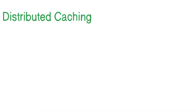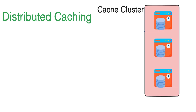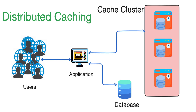So what is the solution? The solution is distributed caching. Instead of relying on a single cache instance, we can use distributed caching to spread the cache data across multiple servers. Different requests can be sent to different cache servers, which improves performance and makes the overall cache system more fault tolerant.